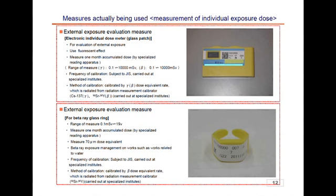Basically, our radiation dose of external exposure is managed by the individual dose meter attached to our chest. However, in cases where there may be a beta ray source within the water and work is needed by hand, there will be the possibility that not only our chest but our hands may be exposed. Therefore, in these cases, these glass rings are attached to our fingers or wrists to measure the surrounding beta rays. A monthly accumulated dose will also be measured after use.